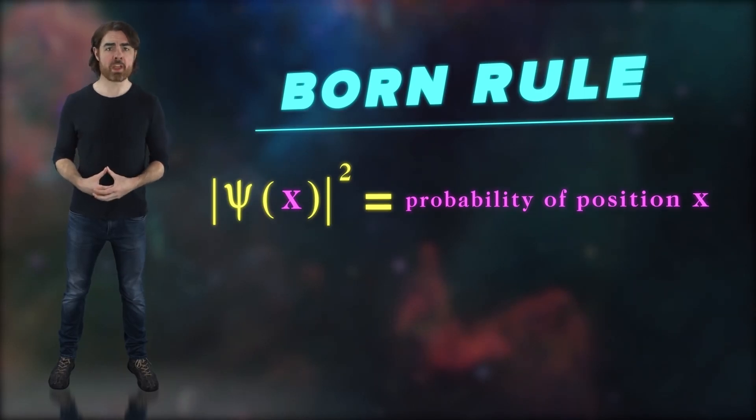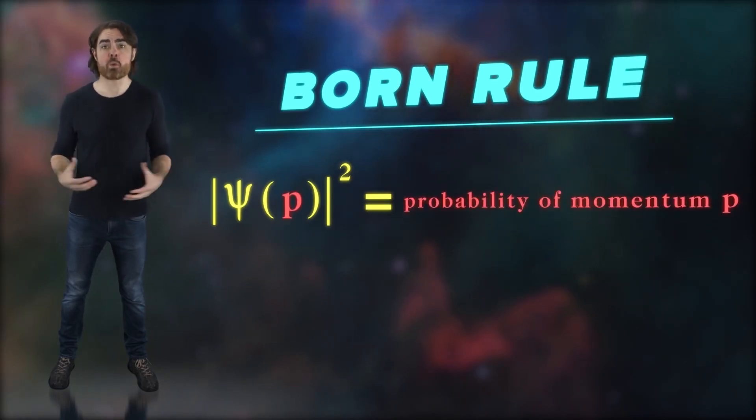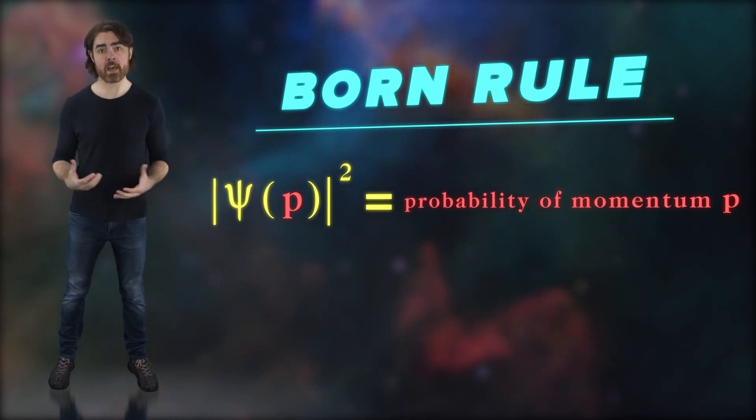If we're expressing the wave function in terms of position, then applying the Born rule tells us how likely we are to find the particle at any given point when we make a measurement. Or put another way, the range of positions in which the particle is likely to be located were we to look. If we apply the Born rule to the momentum wave function, then we learn the range of momenta the particle is likely to have.